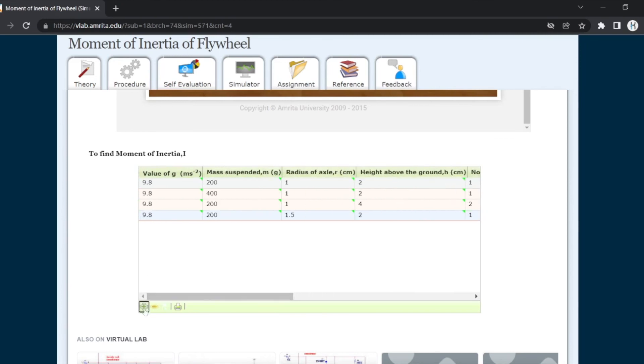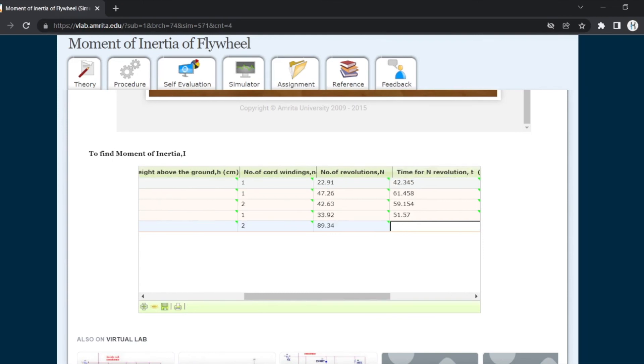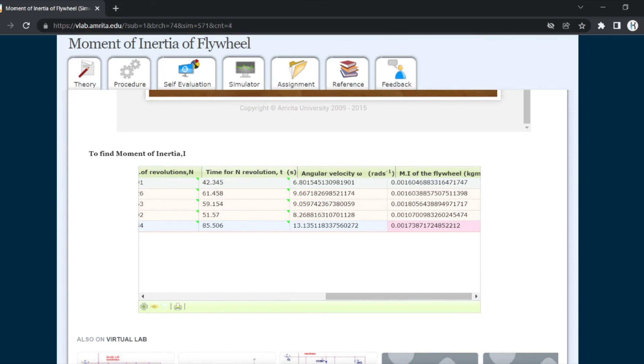The next reading we made was increasing the radius of the axis. We kept diameter 3, so radius will be 1.5 centimeters. Height became 2 centimeters, number of windings was 1, number of revolutions was 33.92, and time was 51.570 seconds. Lastly we changed all the parameters. We kept diameter 4, so radius 2 centimeters, mass 400 grams, height 4 centimeters, number of windings 2. The revolutions we got was 189.34 and time was 1 minute 25 seconds, so 85.506 seconds. You can note the final moment of inertia. Take all these moments of inertia, add them up, and divide by number of readings, which is 5 here, to get the average.